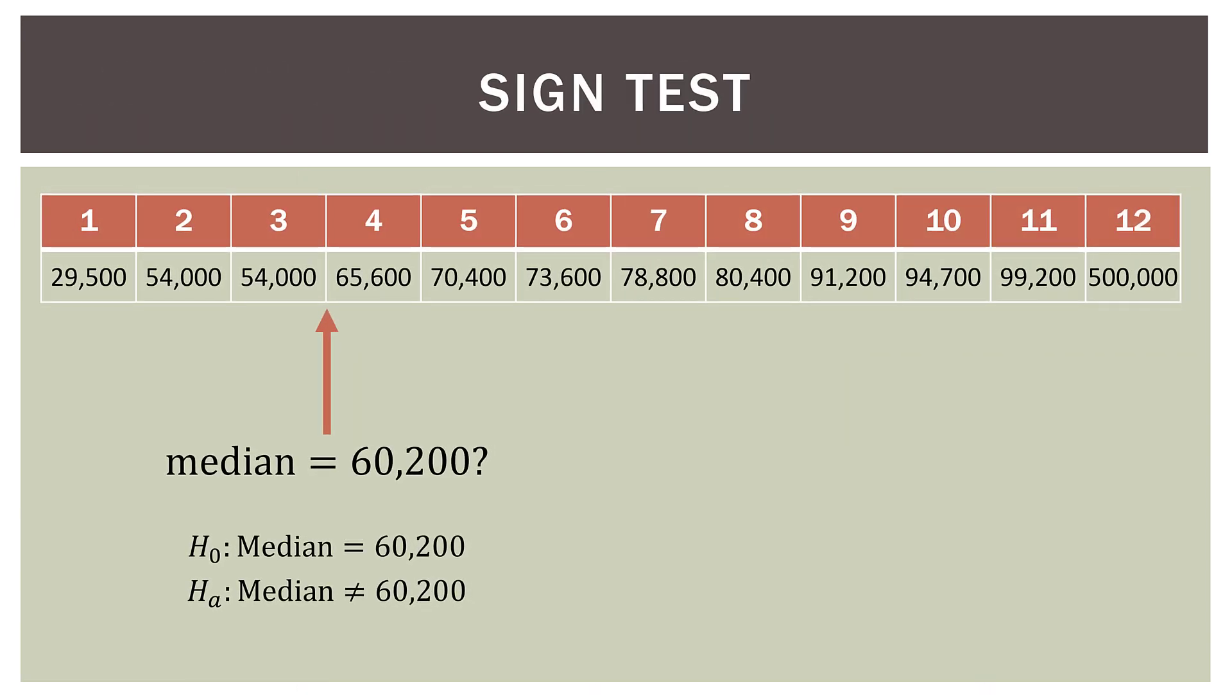Okay, so the sign test. Now the sign test is oftentimes or usually the first method you will learn about in nonparametric statistics, because it's the most basic, it's the easiest to understand. So I went ahead and put our data back to where it was before. And now we're going to make a hypothesis that the median of this data set or the middle point is $60,200. So we can see that our null hypothesis is median equals $60,200 and our alternative is that it's not equal to $60,200.